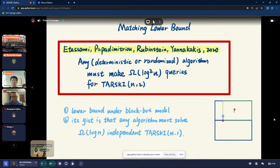In 2020, Atesame, Papadimitriou, Rubinstein, and Yanakakis give us a matching lower bound for two-dimensional Tarski. It says any deterministic or randomized algorithm must make omega log square queries for Tarski n squared. This lower bound is under black box model, which means the algorithm can only have oracle access and query the value of some points. The most interesting part is that the proof of this lower bound shows that any algorithm must solve omega log n independent one-dimensional Tarski problems, which is exactly what the binary search does. This suggests that the log n to the k query algorithm is essentially optimal for arbitrary constant k.